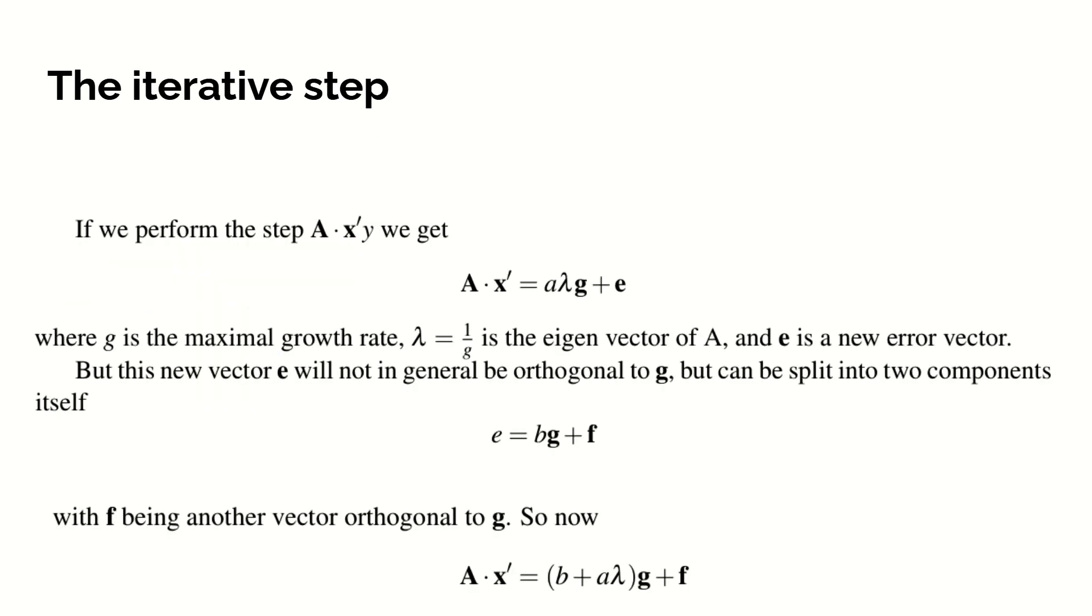If we perform the iterative step we're repeatedly doing, and 1 upon G is the eigenvector. Once we've done the iterative step, we can again split it into two components. E is a new error vector, and this is the scaled version of Ag. It's now been scaled by lambda. But this new error vector, E, will also not be orthogonal. So we can again split that into two components. A component B along the direction G, and a component F that is orthogonal.